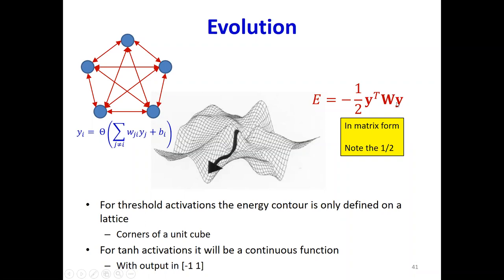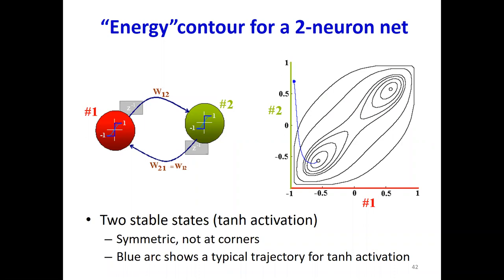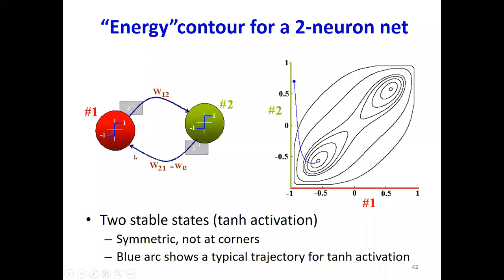This energy is defined the same way regardless of whether we use a threshold activation or a tanh activation, and the evolution of the network is always going to be reducing this energy. Let's consider a very simple two-neuron network. What would this energy contour look like? The x-axis is the output of the first neuron, the y-axis is the output of the second neuron. At any configuration I can compute the energy, which is simply minus half y-transpose W y.